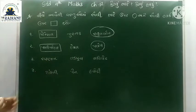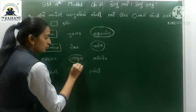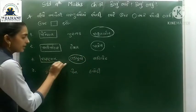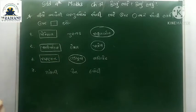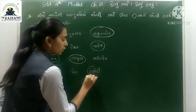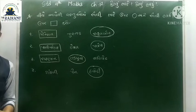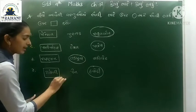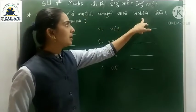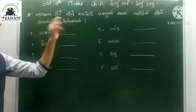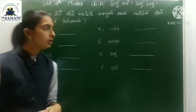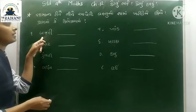ત્રીજો સેટ: ટાકળી (નખ), પેન, હથોડી - આ ત્રણ માંથી સૌથી ભારે હથોડી છે, અને સૌથી હળવી ટાકળી (નખ) છે. આ રીતે સામાન્ય ચીજ-વસ્તુઓ ની ભારે-હળવી ઓળખ કરી શકીએ છીએ.